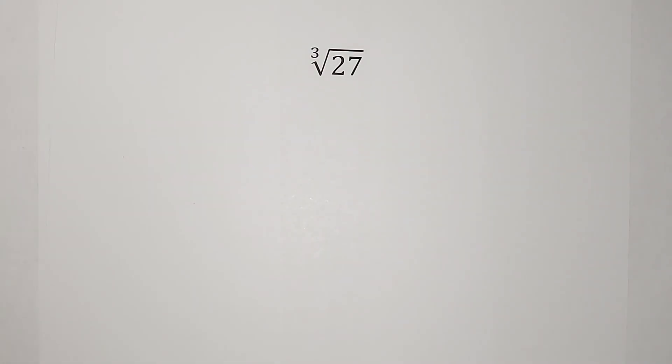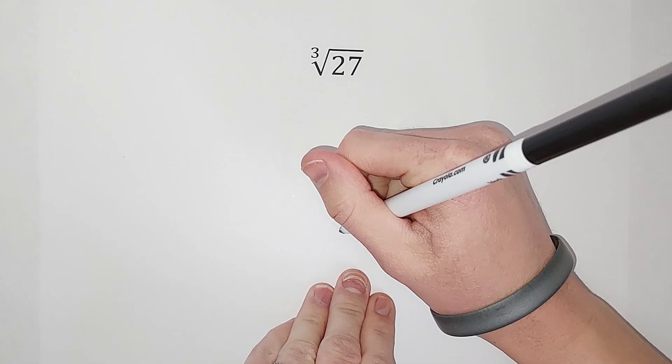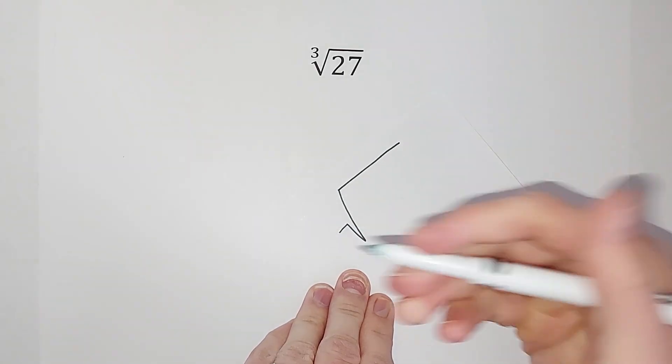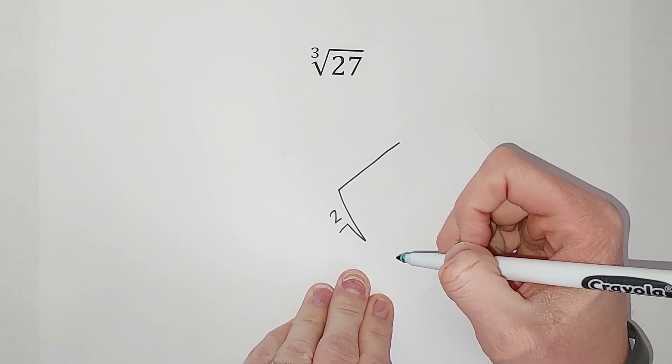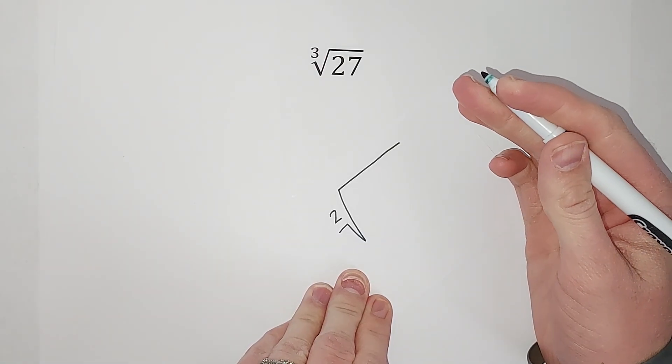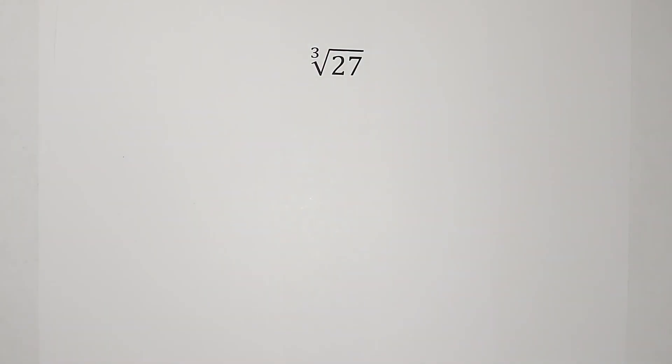So what they're asking here when that little three is there is they're asking what number times itself three times gives me that number instead of two. On a normal, I say normal, on the one we're more used to seeing that's just like that, there really is like a two here. We just don't normally draw it, but it is technically there. But now it's a three.